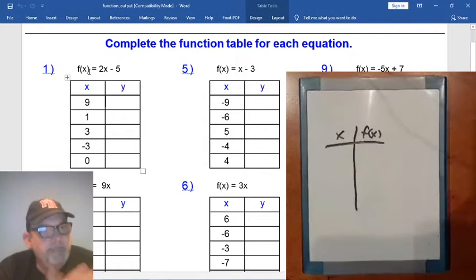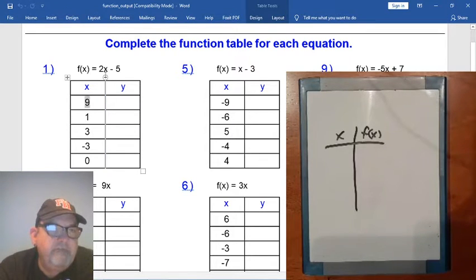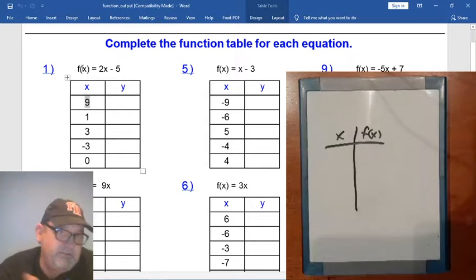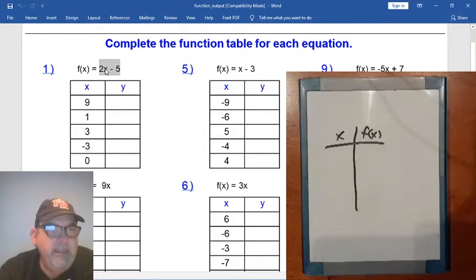So we have F of X, which, again, is the same as Y, equals 2X minus 5. All right. So then we have this XY table set up, and we are given a bunch of numbers for X. So what we do is for each X that they give us – so like here, they give us 9, right? We're going to substitute 9 for X in our equation up here. And when we solve it, that will give us what F of X is, which is Y. So again, remember, this is the input-output box here. And what we're going to do is we're going to input numbers to replace X. And then the answer that we get will be our Y. Pretty simple.